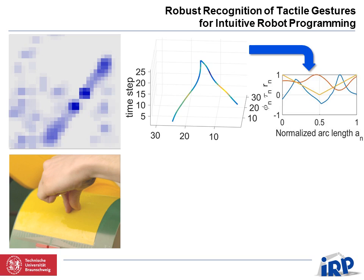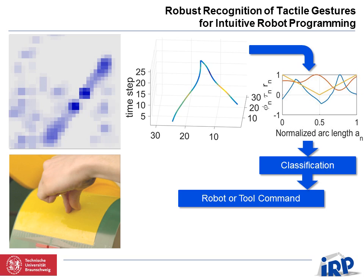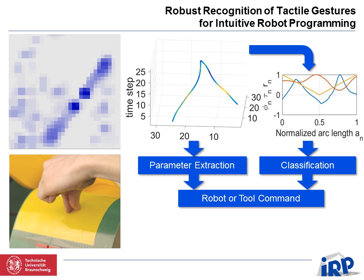Based on the phi-tau-r representation, first each curve and subsequently the entire gesture is classified and labeled. The label is then mapped to a robot motion or tool command. Parameters of the command, such as grip forces, direction vectors and velocities, are extracted from the space curve representation. After parametrization, the command is executed by a robot, as demonstrated in the following examples.